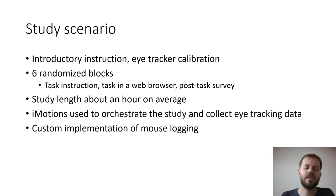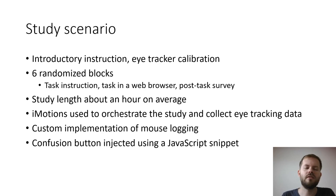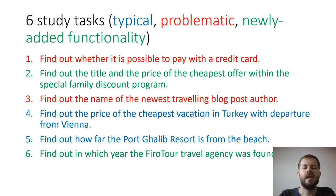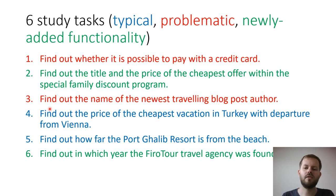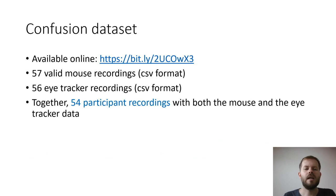We used iMotion software to orchestrate the study and collect eye tracking data, but used our own custom implementation for mouse logging. The confusion button was injected into the travel agency web page using a JavaScript snippet, with consent. We designed six tasks in cooperation with customer service: two tested newly added functionality, two tested typical functionality representing common user behavior, and two were problematic tasks as identified by the customer service.